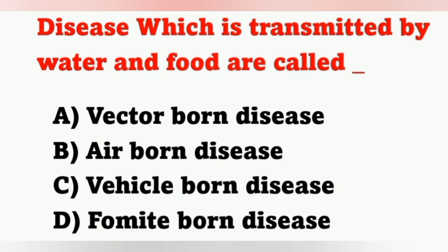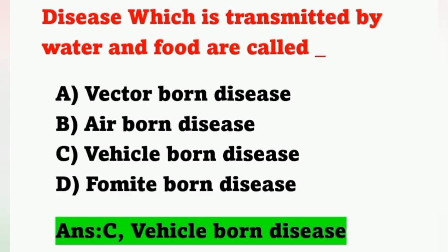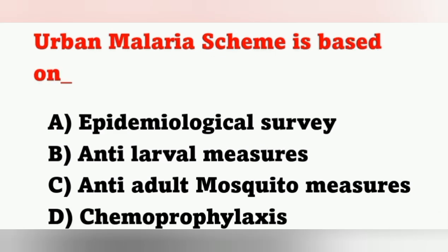Next question: Diseases transmitted by water and food are called? Options: A) Vector-borne disease, B) Airborne disease, C) Vehicle-borne disease, D) Fomite-borne disease. Diseases transmitted by water and food are called vehicle-borne diseases. Option C is correct. Vector-borne means transmitted by vectors like mosquitoes, fleas. Airborne means through droplet infection. Fomite-borne means infection from contaminated objects.